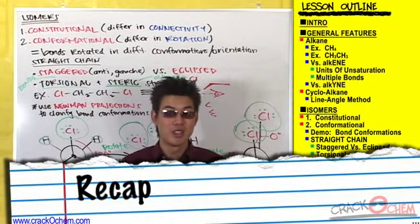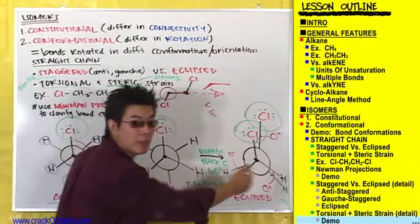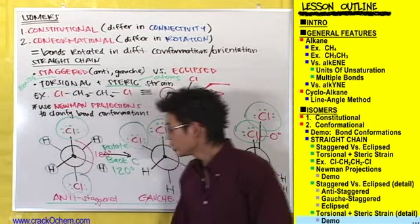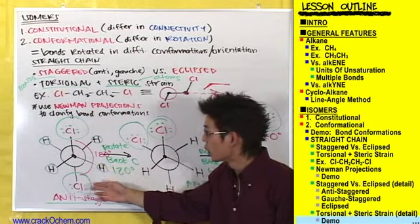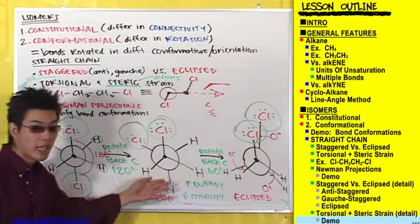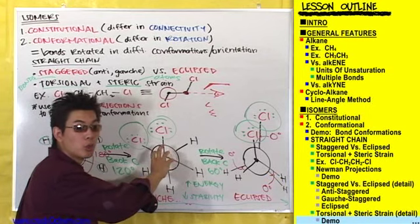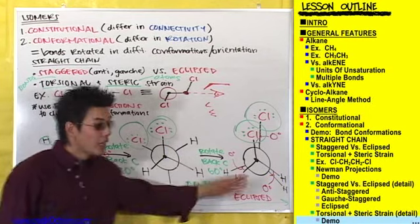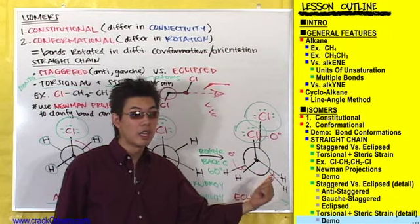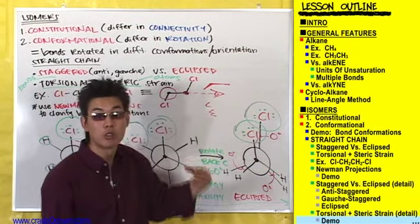So what this boils down to is that your professor most likely wants you to know just how to draw these three main conformations: the anti-staggered, the gauche staggered, and the eclipsed. There's only one possible anti-staggered conformation, with the two largest substituents 180 degrees apart. For gauche staggered, you can draw either of the two depending on whether you rotate clockwise or counterclockwise. For the eclipsed, your teacher will most likely want you to draw the fully eclipsed conformation where the two largest substituents — the chlorines — are overlapping each other.